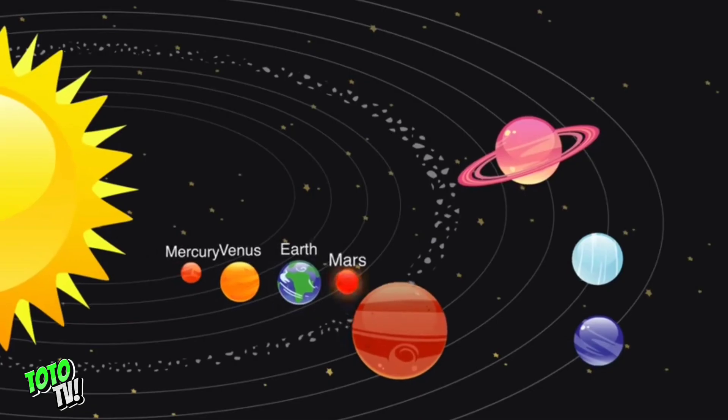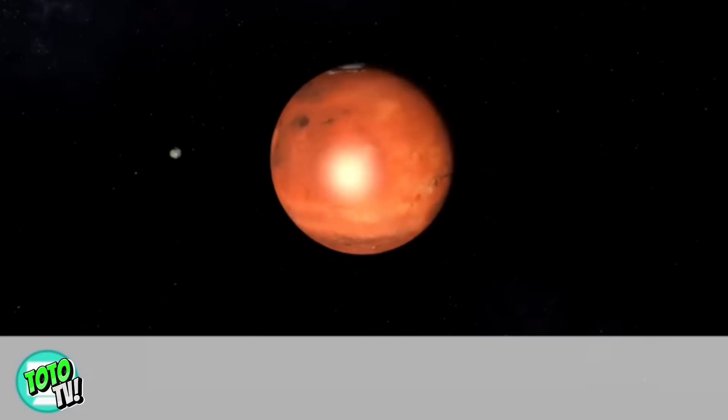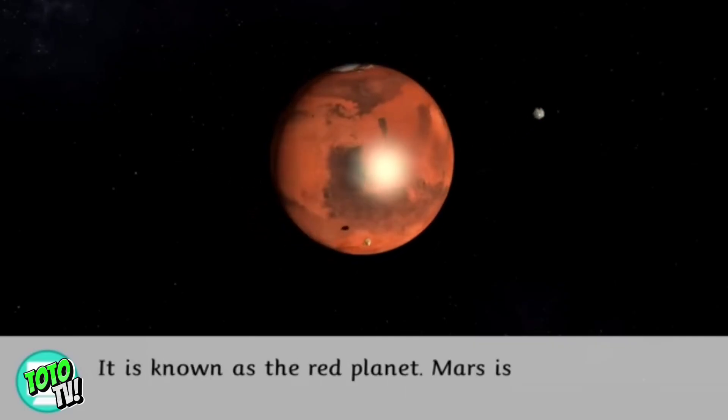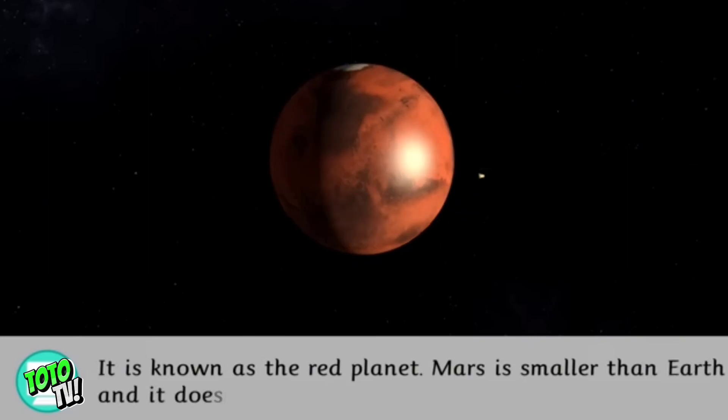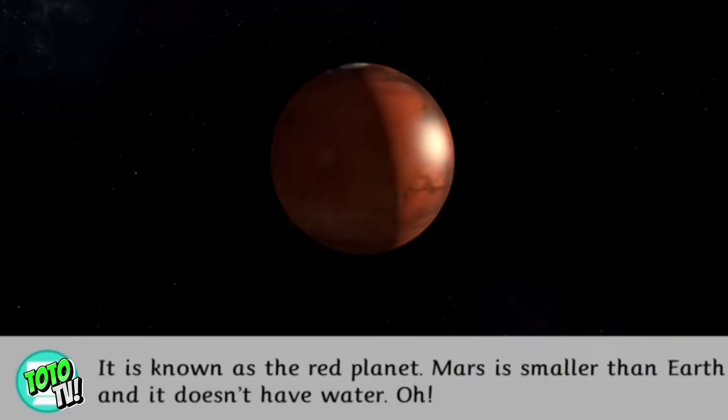The fourth planet from the Sun is Mars. It is known as the Red Planet. Mars is smaller than Earth and it doesn't have water. And it has two moons.